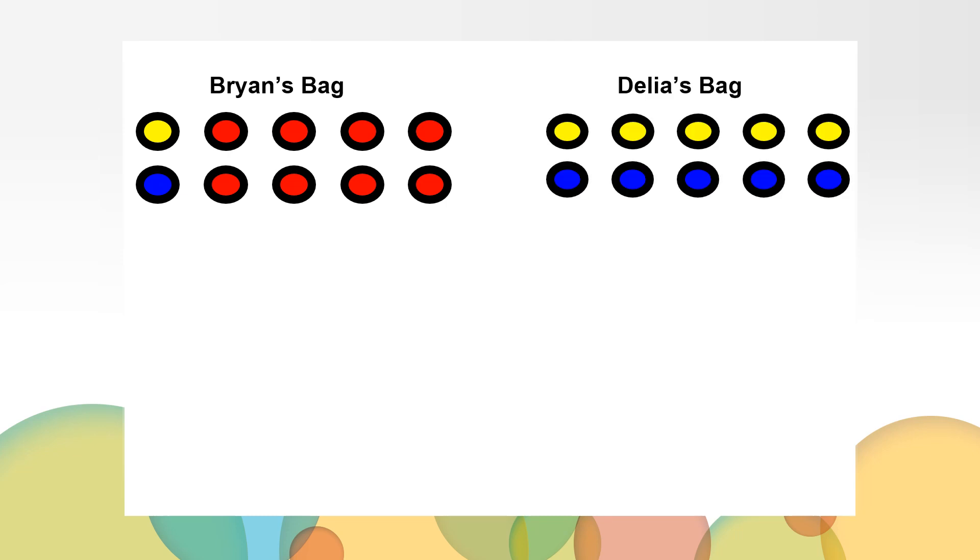Delia's bag looks like this. You might notice that all of Delia's marbles are either yellow or blue. She has five blue marbles and five yellow marbles. This means that you are equally likely to pick a yellow or a blue marble from her bag.